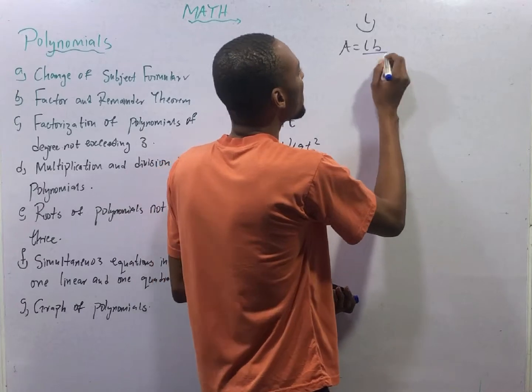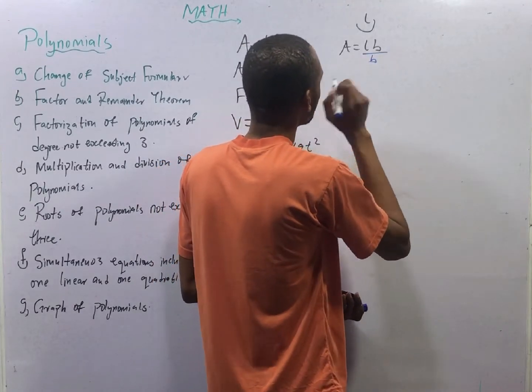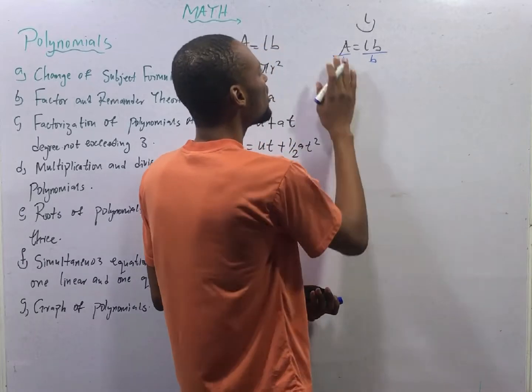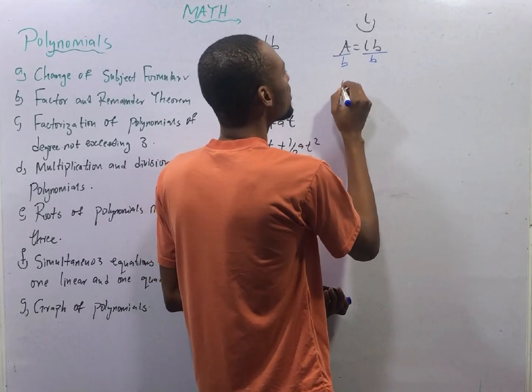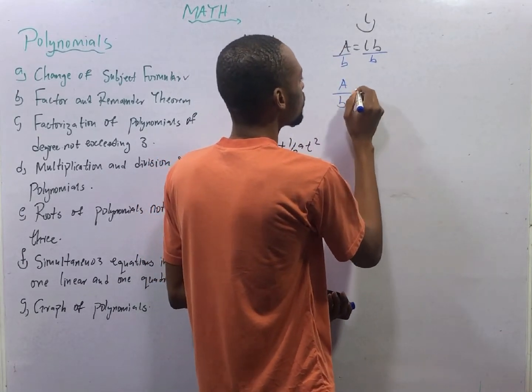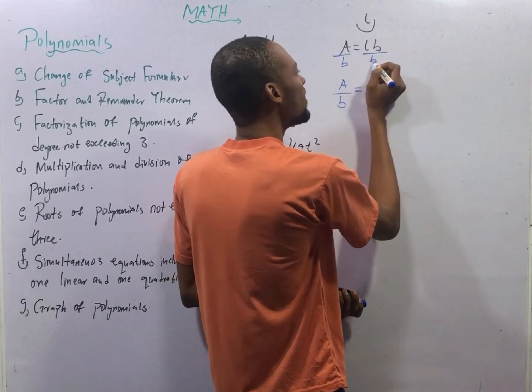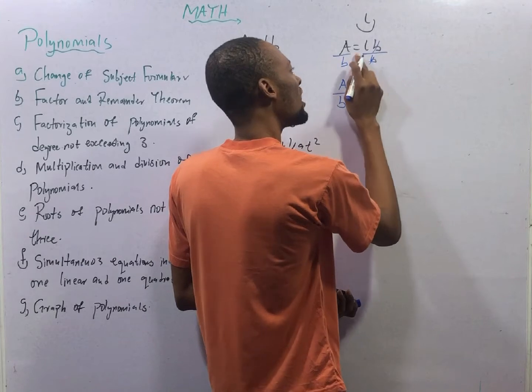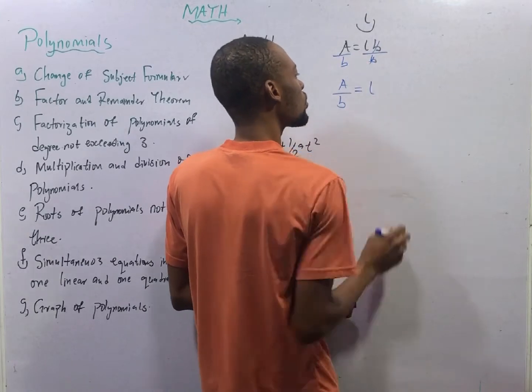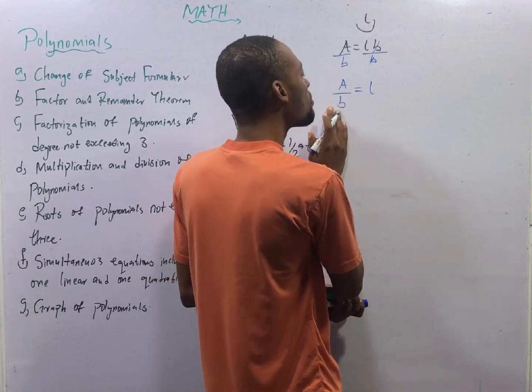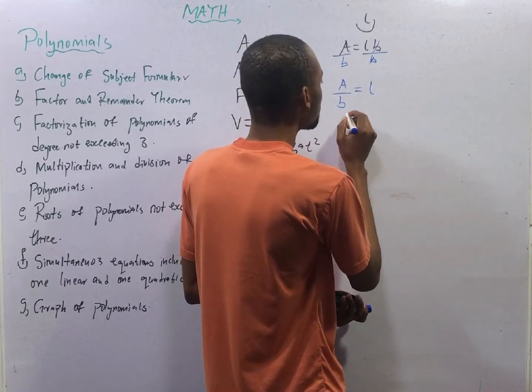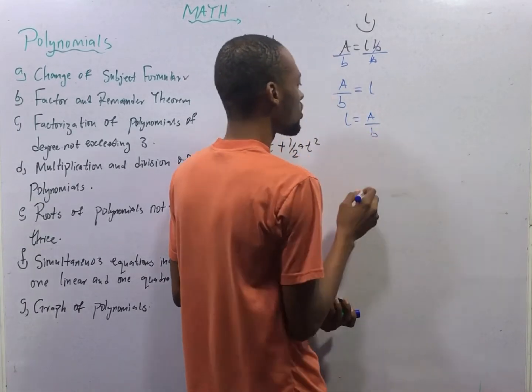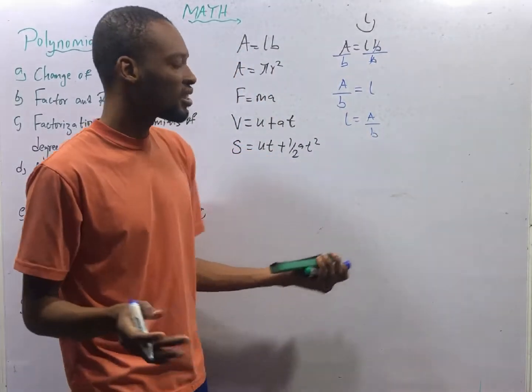We can divide here by B. We divide here by B so that A divided by B remains A over B equals LB divided by B. B divided by B is 1, we are left with L. If A over B equals L, it simply means that L equals A over B. So L is the subject formula.